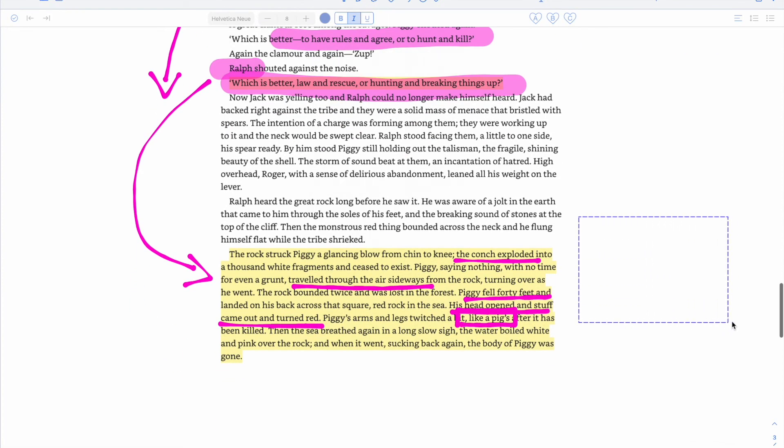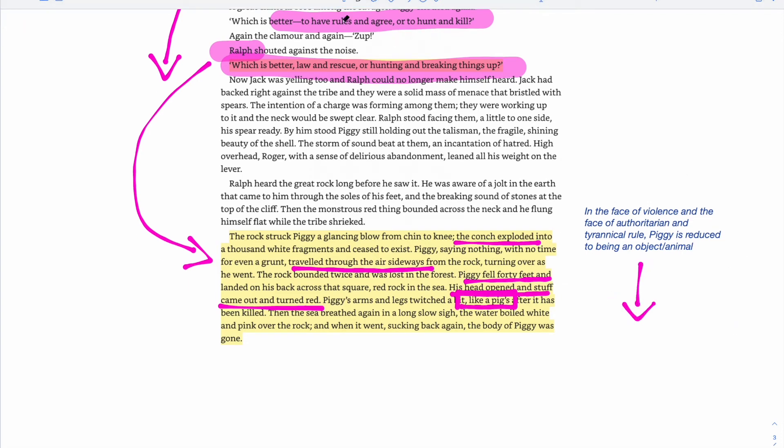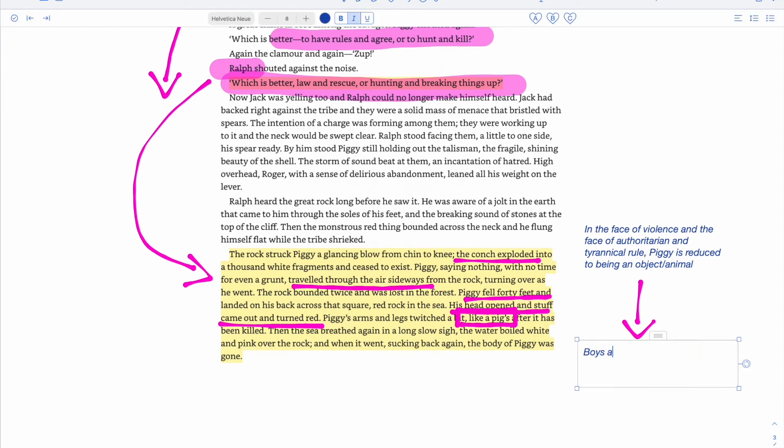So again, it's out of Piggy's head where all of this comes. And again, it's not describing the brains being splattered across the rocks. It's just 'his head's opened up and stuff came out.' It's as though from the boys' perspective, they're unable to comprehend the level of violence that they have enacted on Piggy there. And again, we have that movement from Piggy being this bag of fat up here, and again reduced then to an object - 'head opened, stuff came out,' described as a simile 'like a pig's after it's been killed.' And again, his humanity is being stripped away here. So again, in the face of violence and the face of authoritarian and tyrannical rule, Piggy is reduced to being an object, an animal.